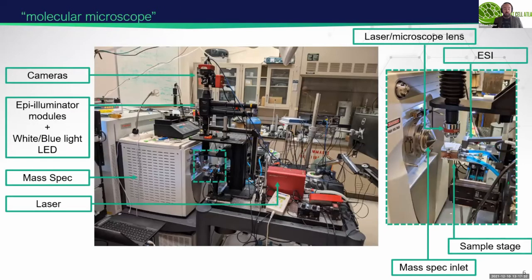This is a picture of the actual source. We have two cameras and two light sources — bright field and fluorescence — attached to a mass spec with a high mass resolving Orbitrap detector. You can see the laser box, and in the zoomed-in picture, you can actually see the sample stage with intercepting ESI and the MS inlet. We also have a dual reflective objective, which allows us to focus the laser and also focus the image.